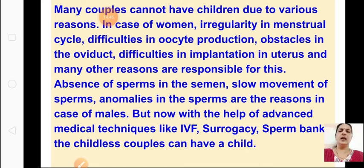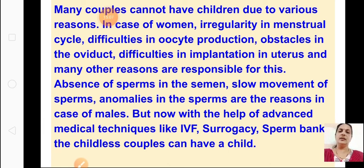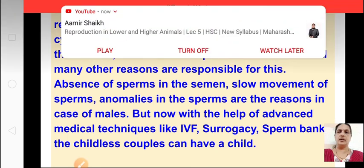With the help of advanced medical techniques like IVF, surrogacy, and sperm bank, a childless couple can have a child. In vitro fertilization (IVF) means the embryo is fertilized outside the body — in a test tube — and after that it is implanted into the uterus.